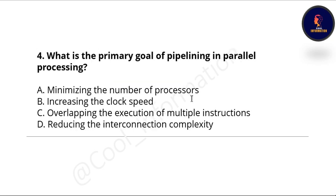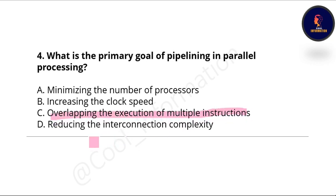Next question: what is the primary goal of pipelining in parallel processing? Options are: minimizing the number of processors, increasing the clock speed, overlapping the execution of multiple instructions, and reducing the interconnection complexity. The correct option is overlapping the execution of multiple instructions.